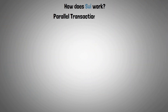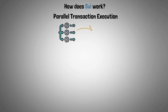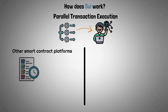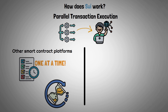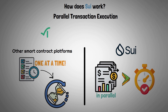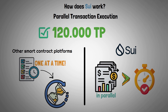Parallel transaction execution is one of SUI's biggest innovations. Other smart contract platforms typically execute transactions one at a time, which means individual transactions take longer to process. However, the SUI blockchain processes transactions in parallel, leading to almost immediate finality. This feature allowed SUI's blockchain to reach 120,000 transactions per second in trial runs.